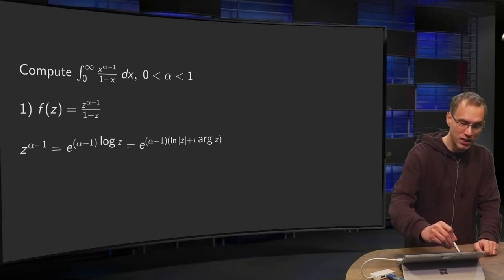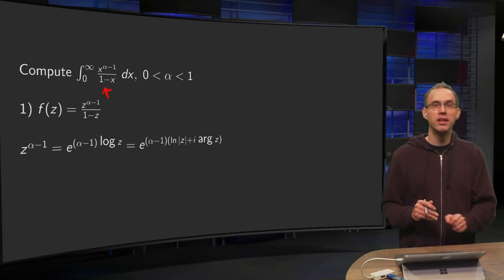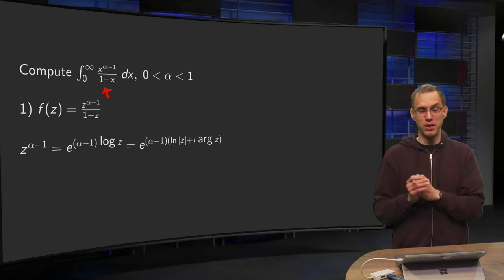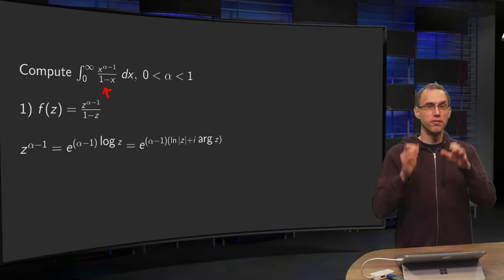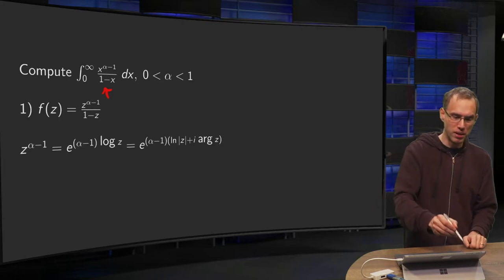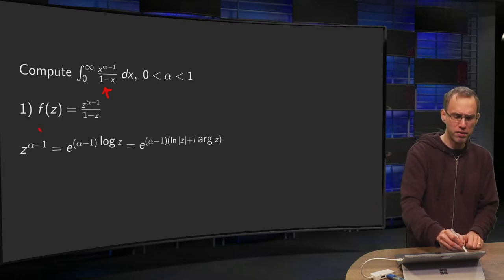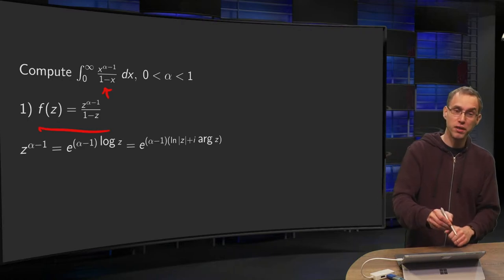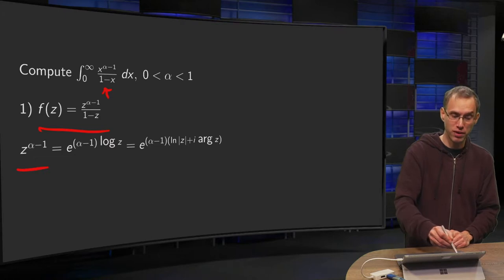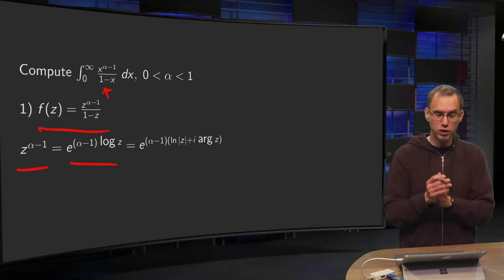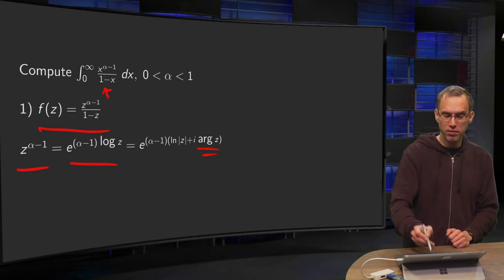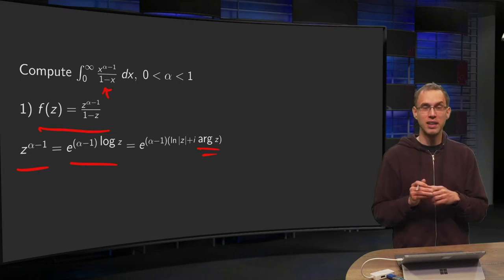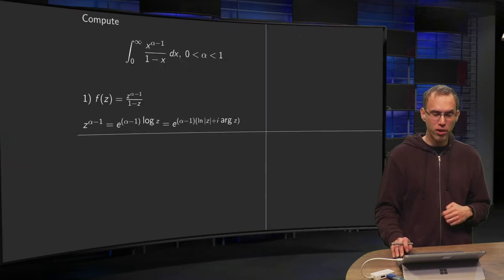So this minus sign is over there. I want to integrate from 0 to infinity, so at x equals 1 now we do have a problem. So first step is you just take a similar f, z to the power alpha minus 1 over 1 minus z now, and you find z to the power alpha minus 1 as usual. But now we really have to think about the argument of z and the contour a bit more carefully. So how are we going to solve that?